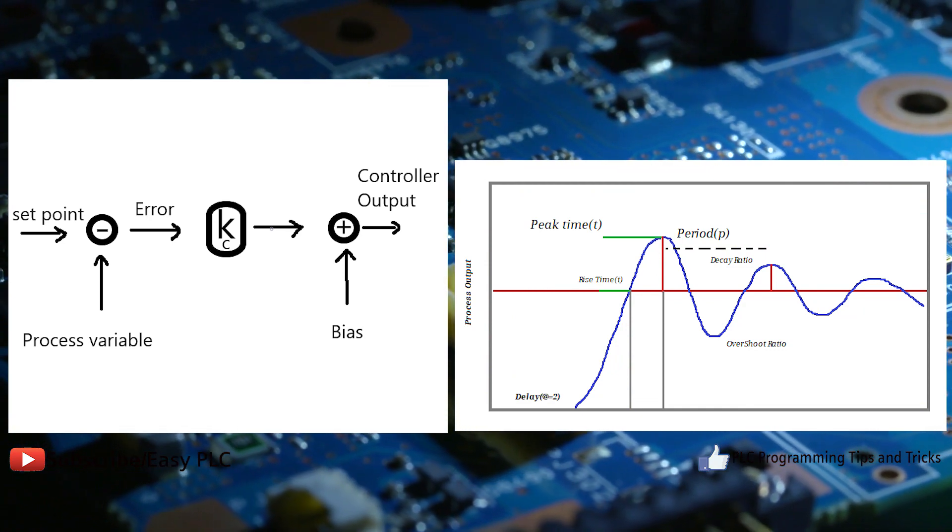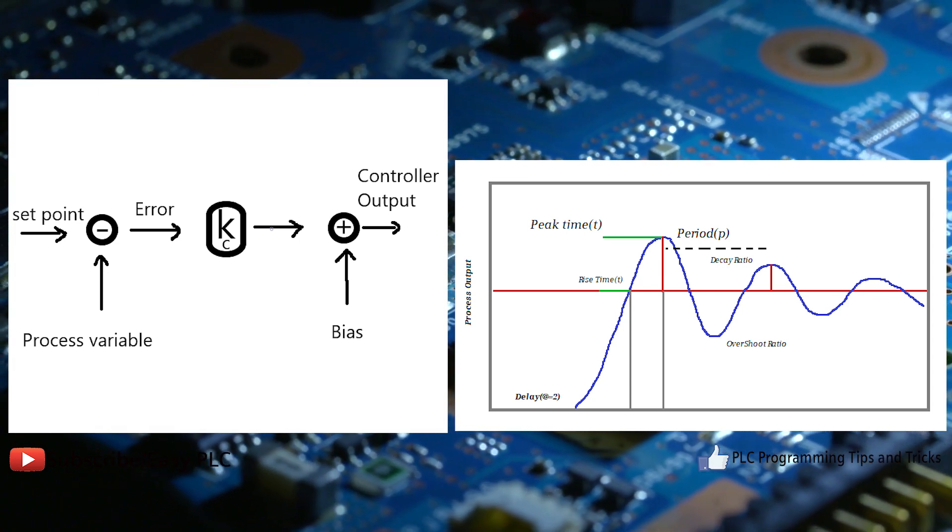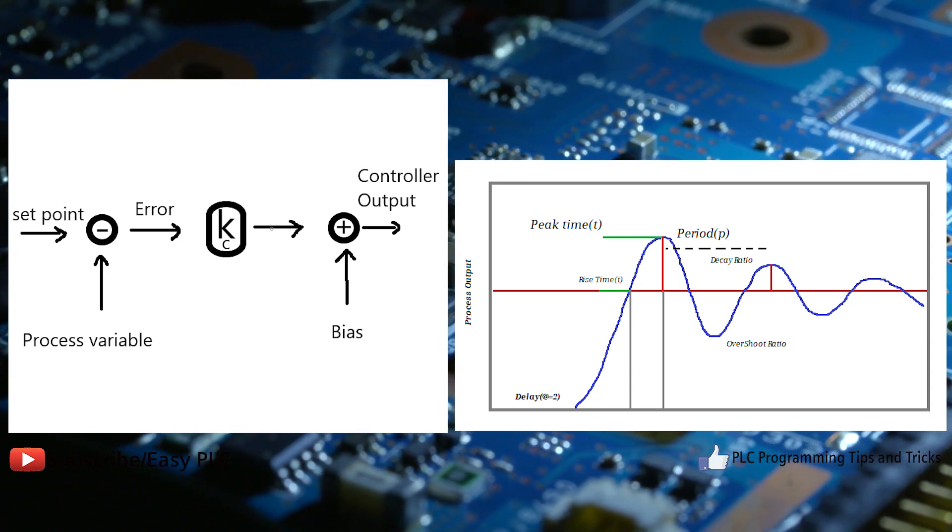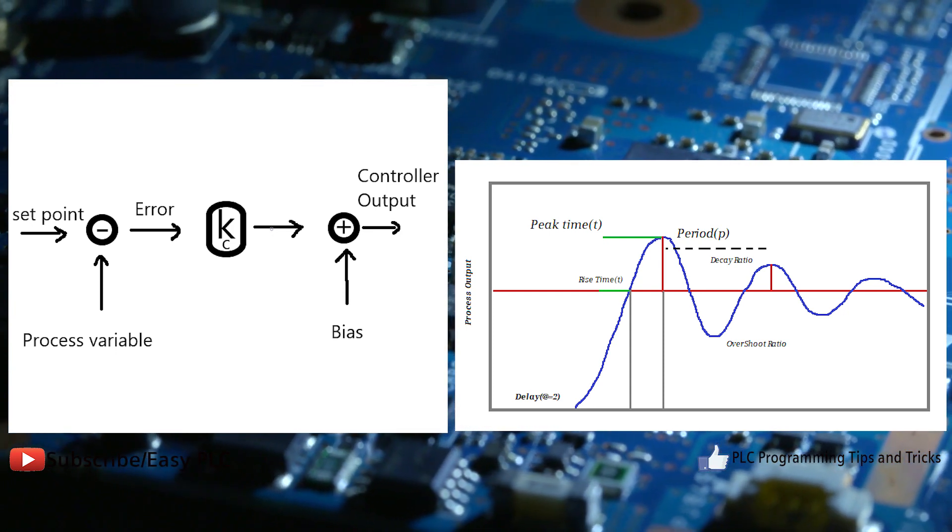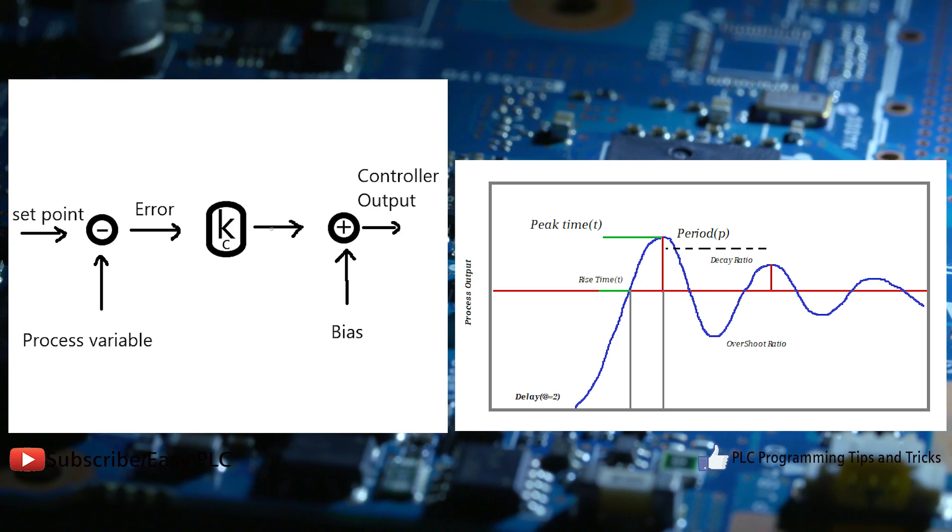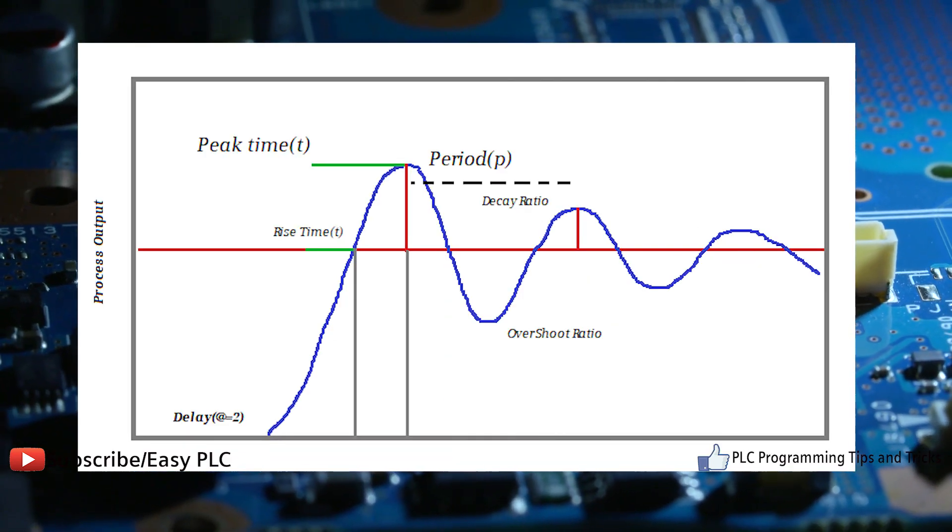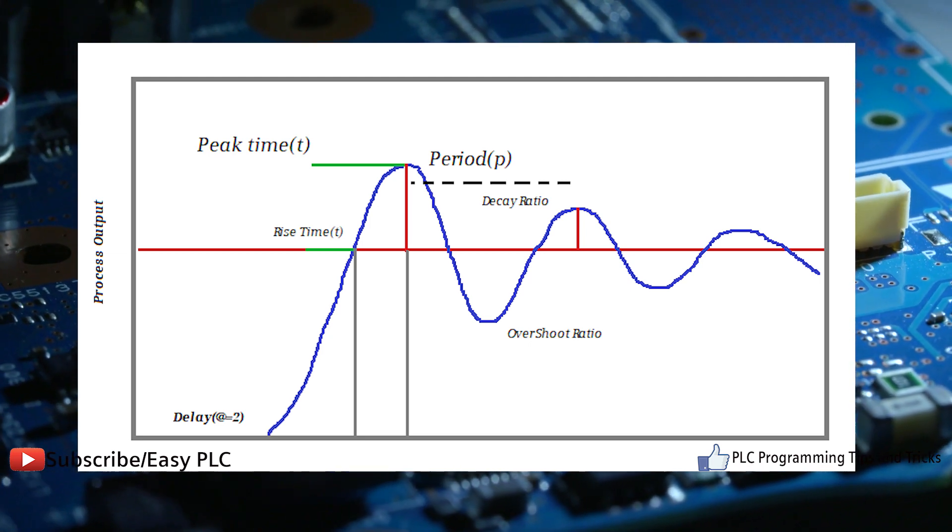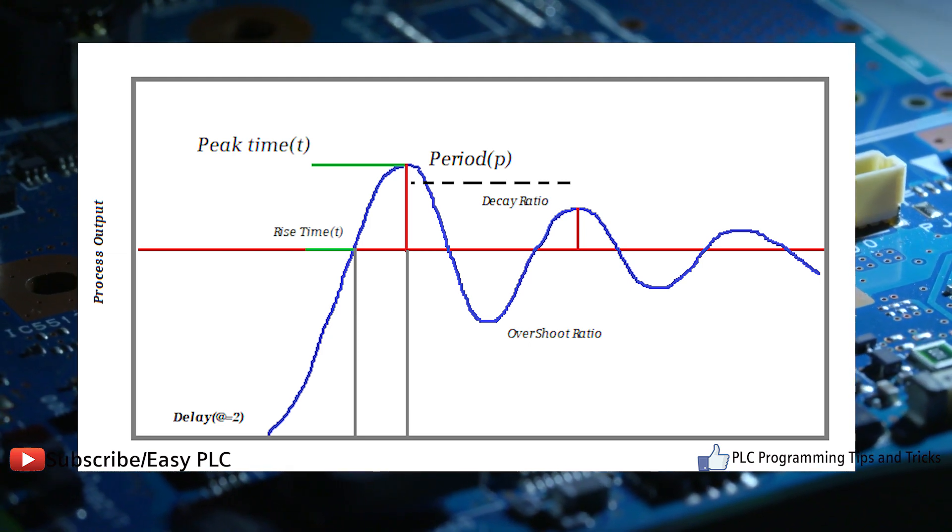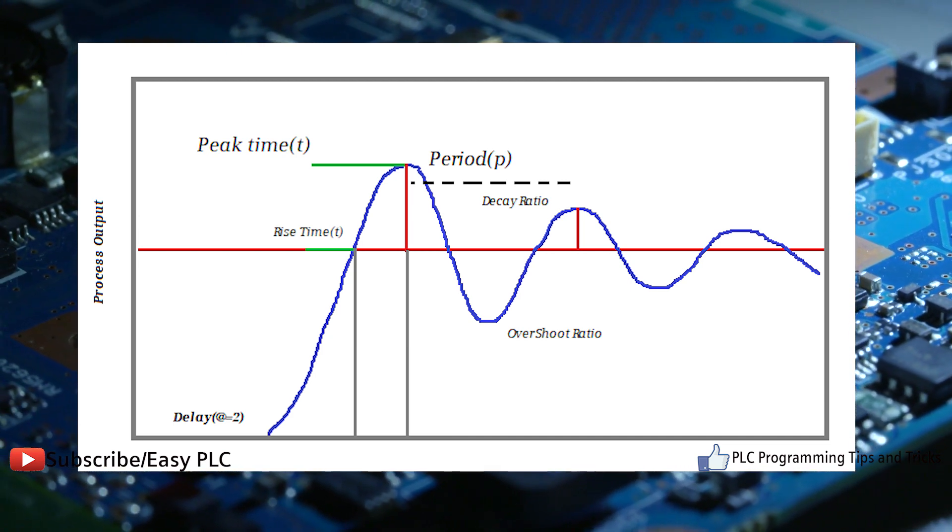P controller compares desired or setpoint with actual value or feedback process value. The resulting error is multiplied with proportional constant to get the output. If the error value is zero, then this controller output is zero. This controller requires biasing or manual reset when used alone.